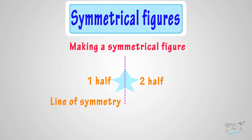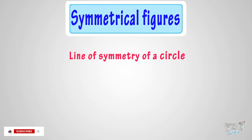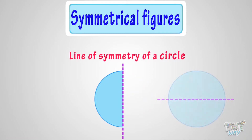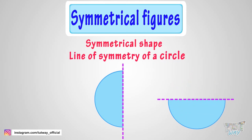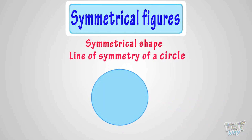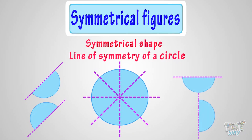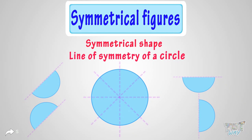You can make many symmetrical figures this way. Now let's learn about the line of symmetry of a circle. Here we have a circle. Is it a symmetrical figure? Let's find out by folding it halfway. If we fold it halfway, one half covers the other half completely. So it's a symmetrical figure. Now let's see how many lines of symmetry a circle has. We can fold it here, and here too. So we can make any number of lines of symmetry in a circle, as all the lines that pass through the center of the circle are lines of symmetry.